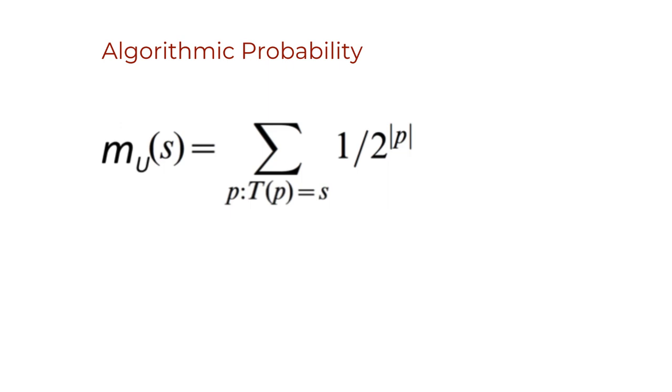However, notice that unlike Chaitin's omega, algorithmic probability is applied to a single object, in this case a string or sequence, for which we want to estimate the probability for a random computer program to produce it.